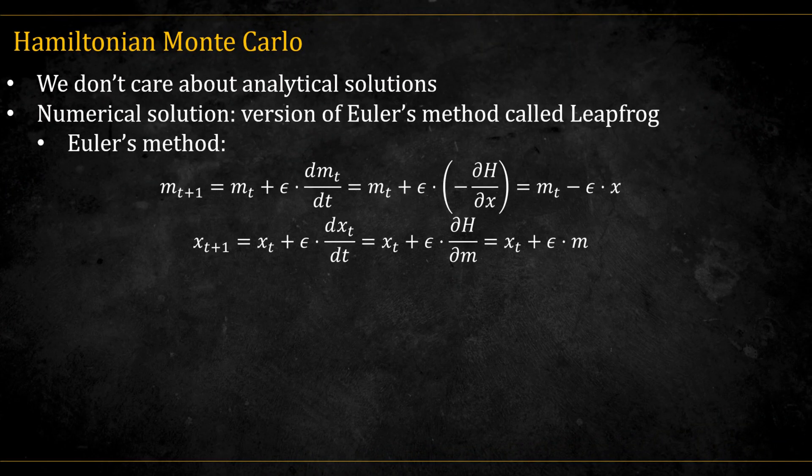In the simple example I just gave, we have an analytical solution. But in practice, we rarely rely on analytical solutions. Instead, we use numerical methods. One of the simplest is the Euler method. At each step, we compute the gradient vector at the current position, and then take a small step, epsilon, in that direction.